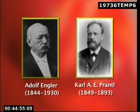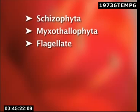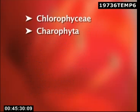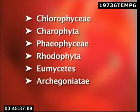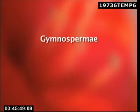Their system of classification is based on trends of evolution in existing families. In this system, the plant kingdom is divided into 14 divisions: Schizophyta, Myxothallophyta, Flagellatae, Dinoflagellatae, Bacillariophyta, Conjugatae, Heterokontae, Chlorophyceae, Chlorophyta, Phaeophyceae, Rhodophyta, Eomycetes, Archegoniatae, and Embryophyta (seed plants). The division Embryophyta is subdivided into two subdivisions: Gymnospermia and Angiospermia.